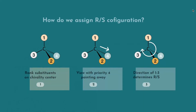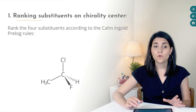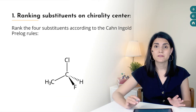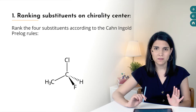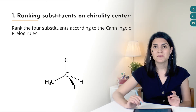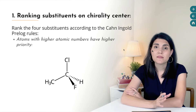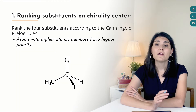The first step is to assign priorities to the four substituents around the chirality center using the Cahn-Ingold-Prelog rules. The four substituents are ranked from high priority, number one, to low priority, number four, based on their atomic numbers. Atoms with higher atomic numbers have higher priority.